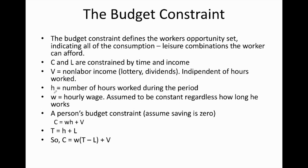Small H denotes the number of hours worked during the period, and small W indicates the hourly wage. We take W as the hourly wage, also sometimes referred to as the wage rate. The wage rate can be measured in terms of hourly, daily, monthly, or annually. We assume that this rate is constant regardless of how long the worker has been working, just to make our analysis simple.